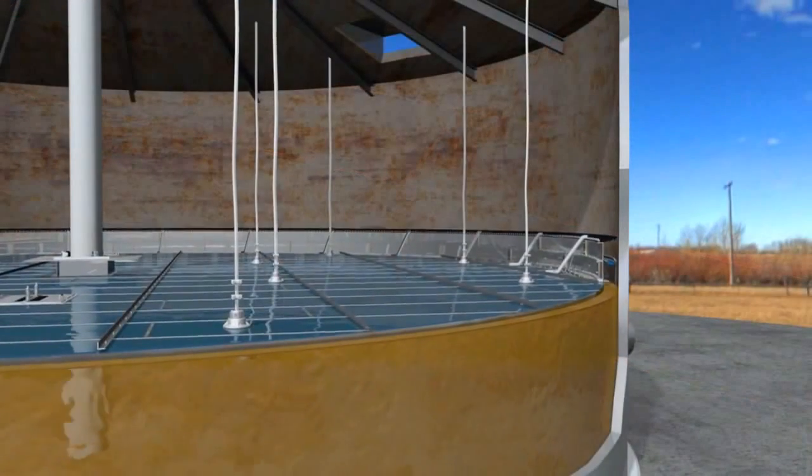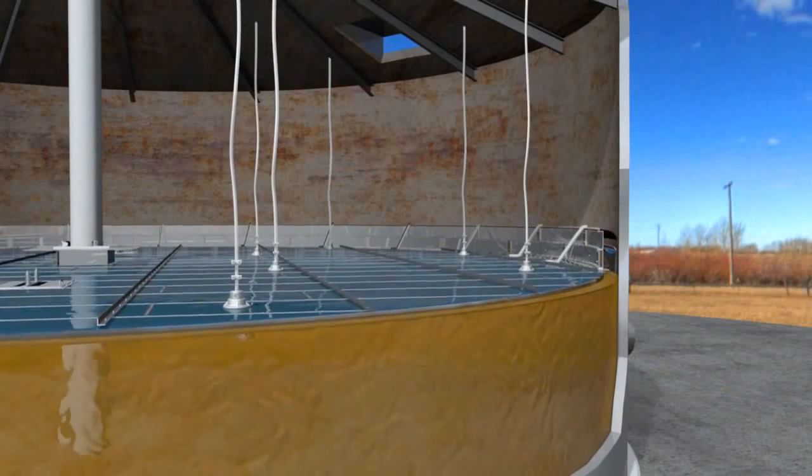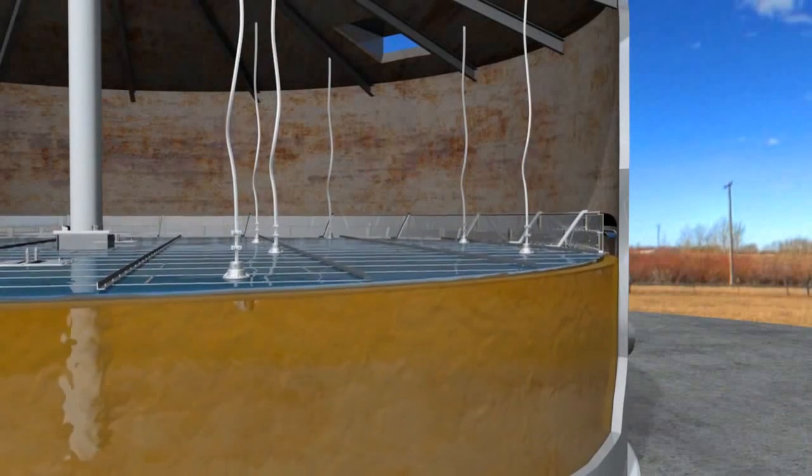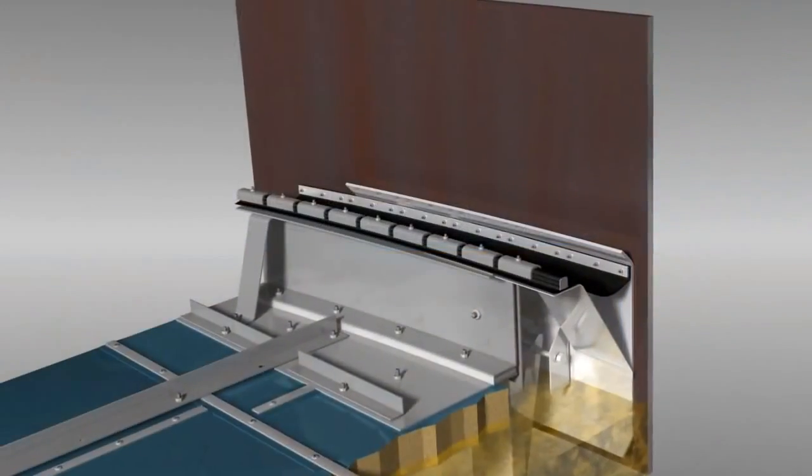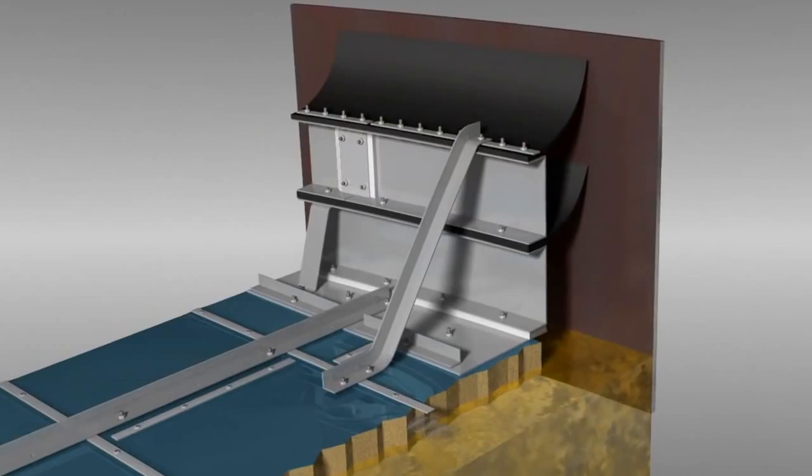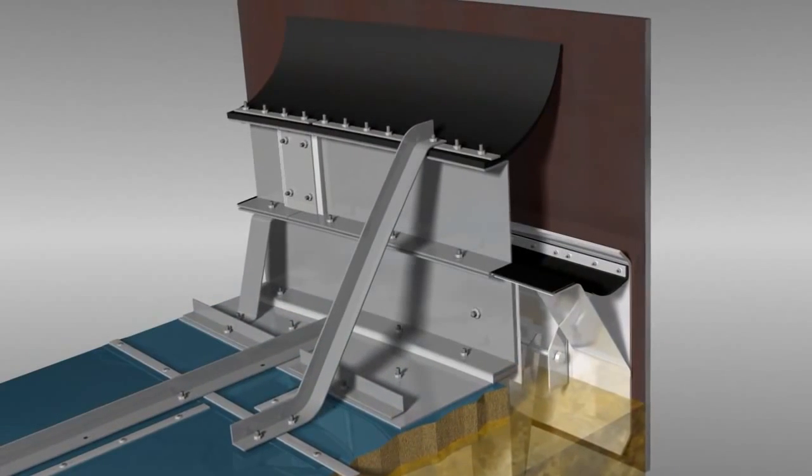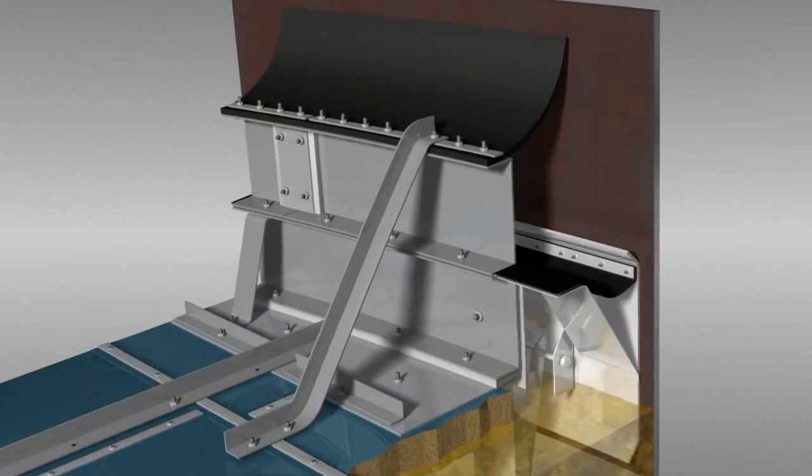The deck perimeter is bordered by aluminum perimeter plates and channels which provide additional rigidity to the edge of the deck and allow to mount the rim seal such as our mechanical mini shoe seal, double wiper seal or combination shoe seal with secondary wiper for added efficiency.